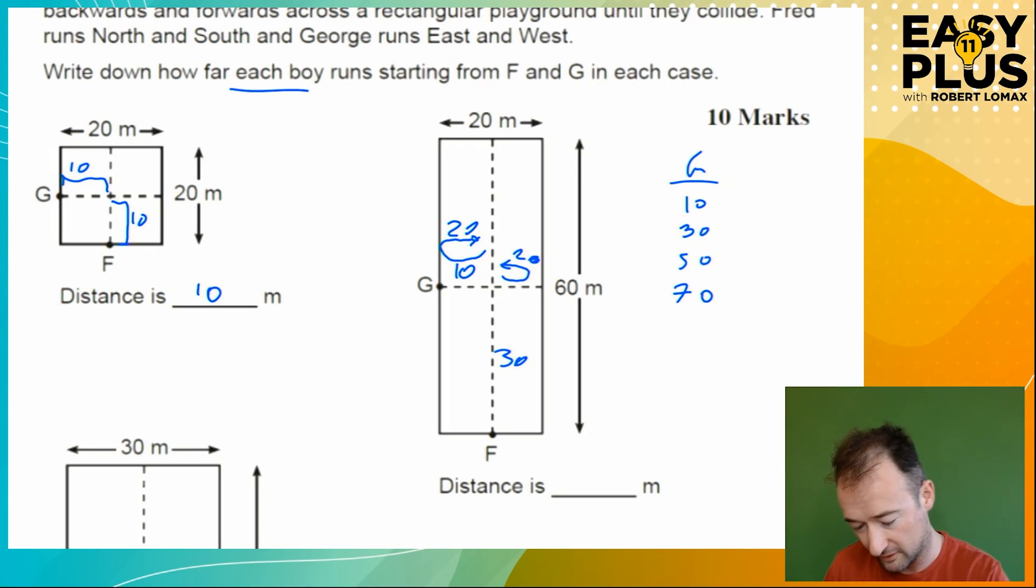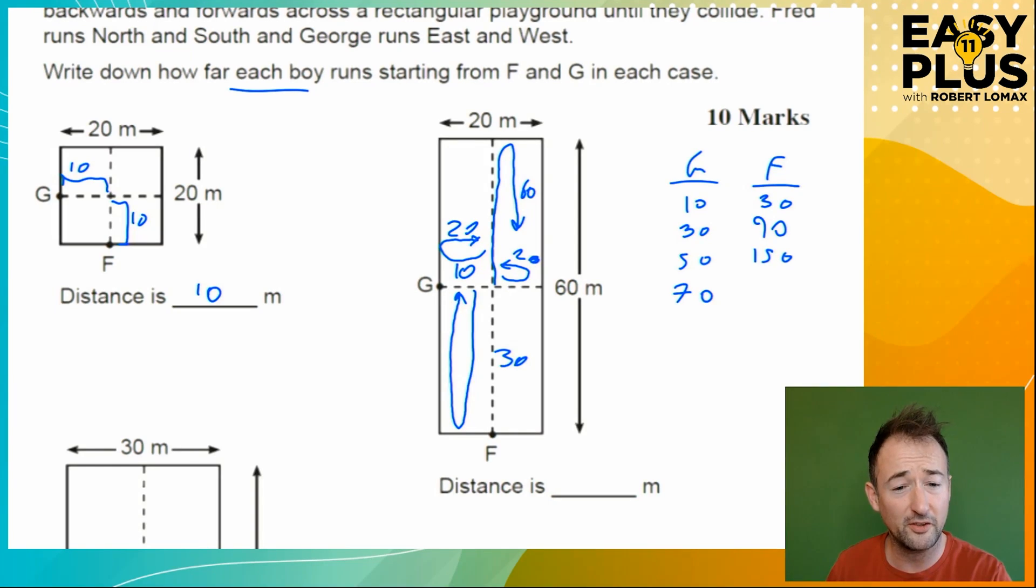Let's produce a similar list for Fred. So Fred gets to the middle after 30 metres, and then after another 30 plus 30 is 60 metres, then after another 30 plus 30 is 60 metres, and so on. But hang on a sec, let's look at the numbers that we've got here. We can see that both boys are in the middle after they have run 30 metres. So in fact, after each boy has run 30 metres, they go bang and hit each other. And that's all we needed to find. So all this extra information here is actually beside the point. Once you've found that they're both at the same place after 30 metres, you have what you need.